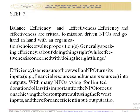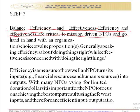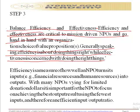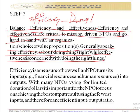The next important step is to balance efficiency and effectiveness. Efficiency and effectiveness are critical to mission-driven NPOs and go hand in hand with an organization's choice of value proposition. Generally speaking, efficiency is about doing things right, while effectiveness is concerned with doing the right things.